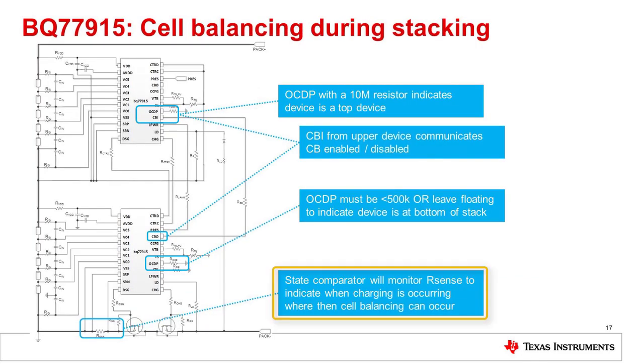In a stack design, the bottom device senses current. The bottom device's OCDP pin is configured for the device to look at the current for a balancing decision. Balancing is indicated for the upper device by the CBO pin controlling the upper part CBI pin. The upper device's OCDP pin is set to indicate that it is an upper part and to ignore current.